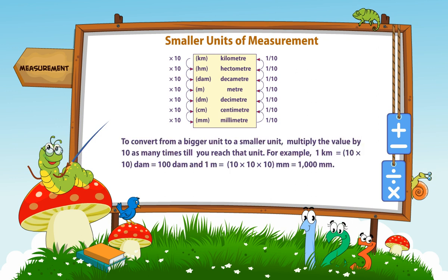To convert from a bigger unit to a smaller unit, multiply the value by 10 as many times till you reach that unit. For example, 1 km is equal to 10 × 10 decameters, which is equal to 100 decameters. And 1 m is equal to 10 × 10 × 10 mm, which is equal to 1,000 mm.